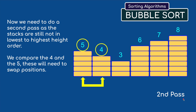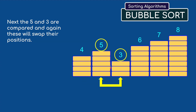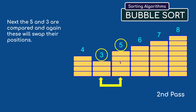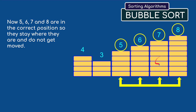We're then going to work on the second pass. As you can see here the five and the four are in the wrong order so these need to be swapped. So four will become the first number. The five and the three are then compared, but again these are in the wrong order so they get swapped. As you can see, five, six, seven, and eight are now all in the correct order and these don't need to be moved.